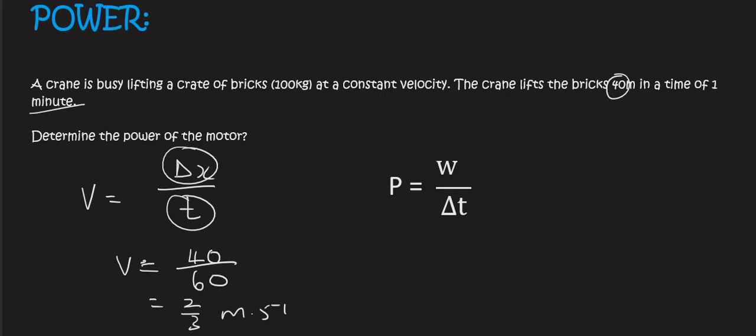We can say that for sure, because it's moving at a constant velocity. It might have reached 40 meters in one minute, but it might have been moving faster and faster. So then you can't use this formula. But because it's moving at a constant velocity, we can get this answer as 2 over 3 meters per second.